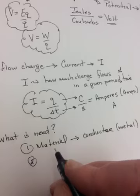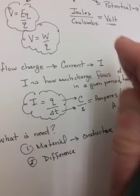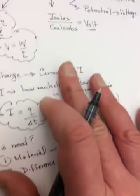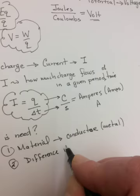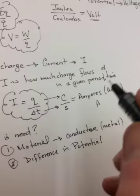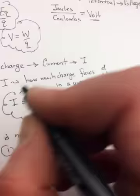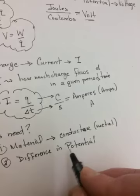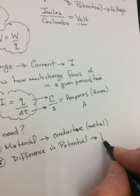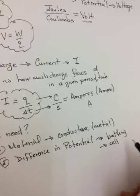A second thing you need to make charge flow is a difference in potential. If you go back to what we were talking about up here, a potential difference, you need something in your circuit that's going to create one spot in the circuit to another that has a difference in potential so that it will flow from higher potential to lower potential. Usually, that's a battery or a cell or maybe a Van de Graaff generator.